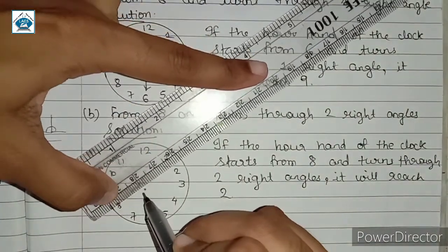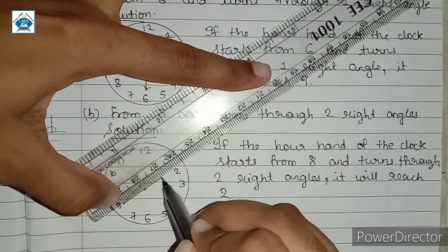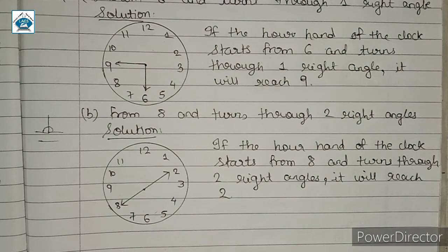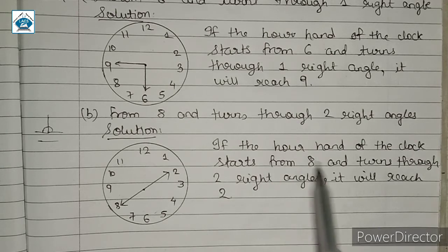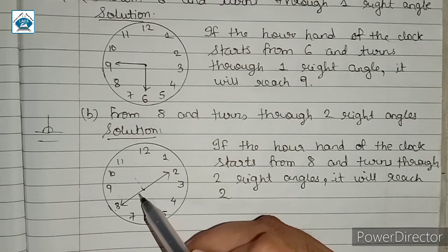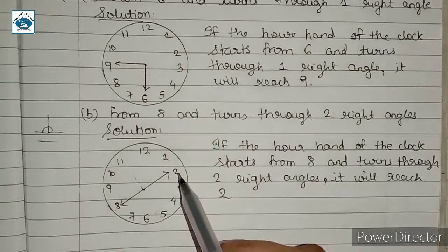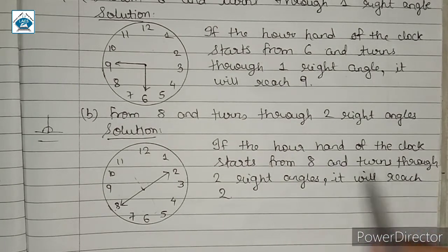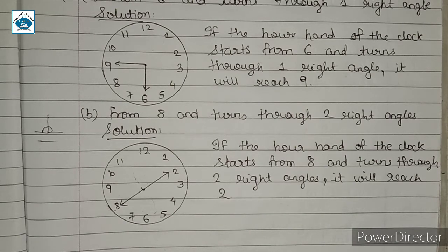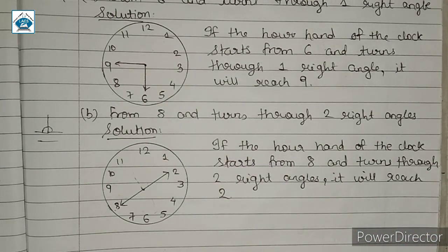If the hand begins at 8 and makes a straight line — 2 right angles means a straight line — then it will stop at 2. The hand turns through 2 right angles, with one right angle and then another right angle forming a straight line, and it reaches 2. For remaining sub-questions c and d, write solutions in the same way, represent using a diagram drawn in pencil.